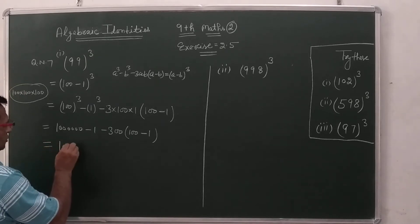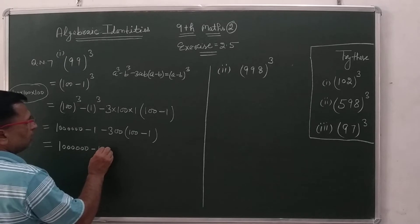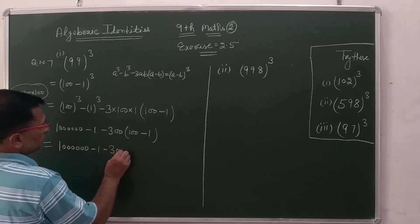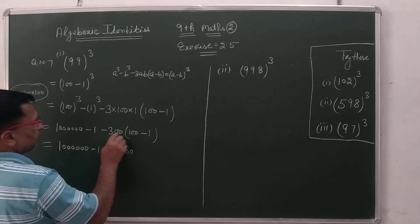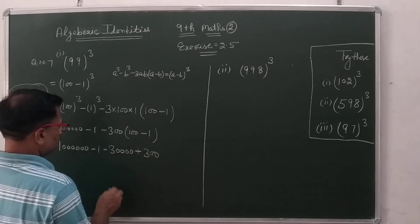It is 1, 2, 3, 4, 5, 6 minus 1 minus 30,000 and minus into minus plus 300.